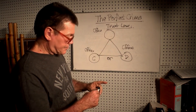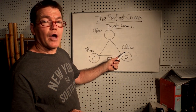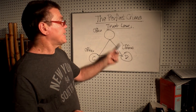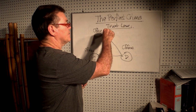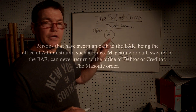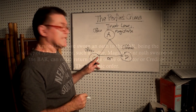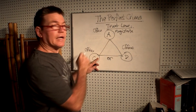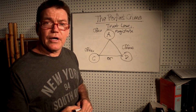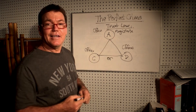Once the judiciary swear an oath to enter — to leave the debtor or creditor standing and become the administrator — that oath is a life oath. They are told how the system works on the condition that they never return back. And if a magistrate or a judge ever attempts to act as the creditor, or ever attempts to step down, then the magistrate will surely die. He won't last. The Vatican will make sure he doesn't last.